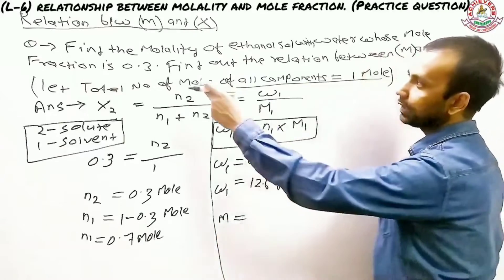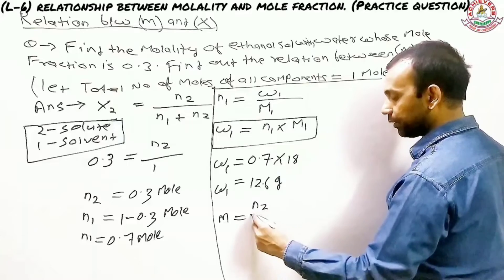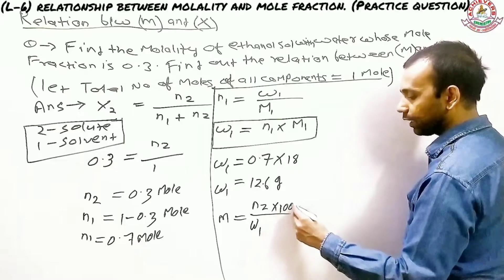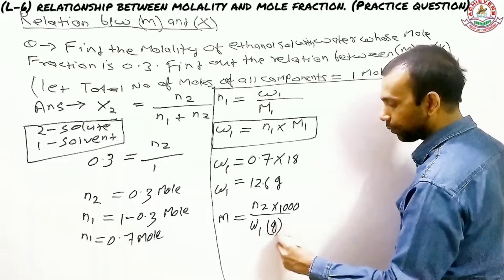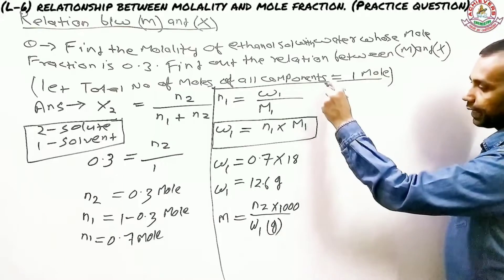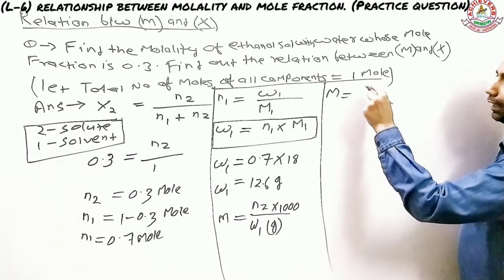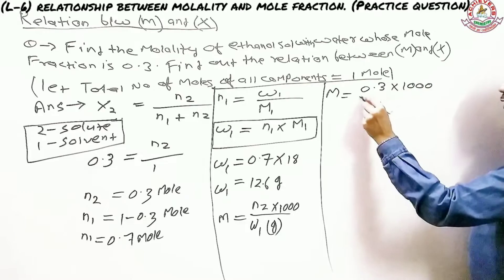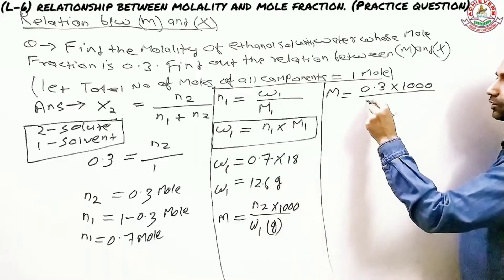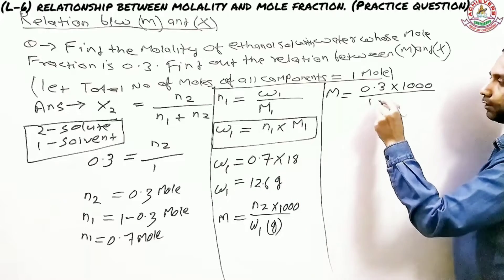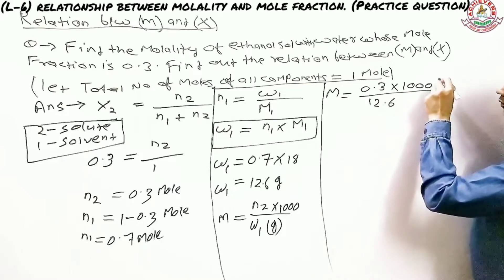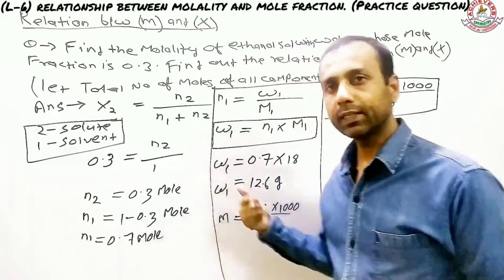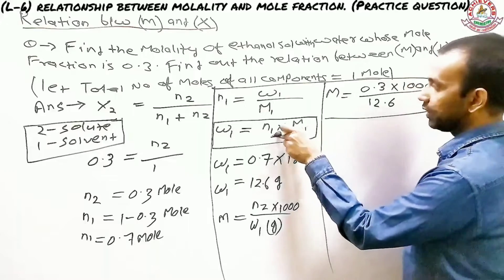Now we can find molality. Molality (m) = n₂ / w₁ × 1000, since w₁ is in grams. Substituting: m = 0.3 × 1000 / 12.6. This is how you find the molality of a solution when the mole fraction is given.